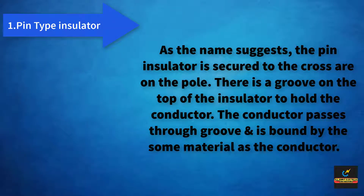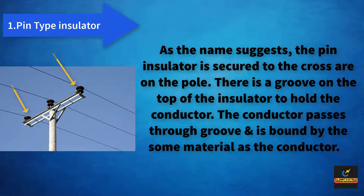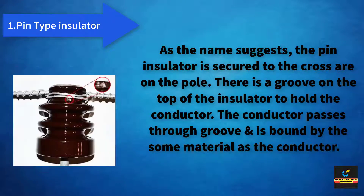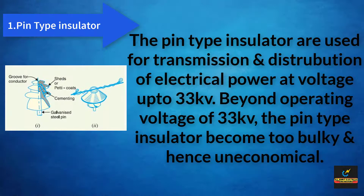First, pin type insulator. As the name suggests, the pin type insulator is secured to the cross arm on the pole. There is a groove on the top of the insulator to hold the conductor. The conductor passes through the groove and is bounded by the same material as the conductor. Pin type insulators are used for transmission and distribution of electrical power at voltages up to 33 kV. Beyond an operating voltage of 33 kV, the pin type insulator becomes too bulky and hence uneconomical.